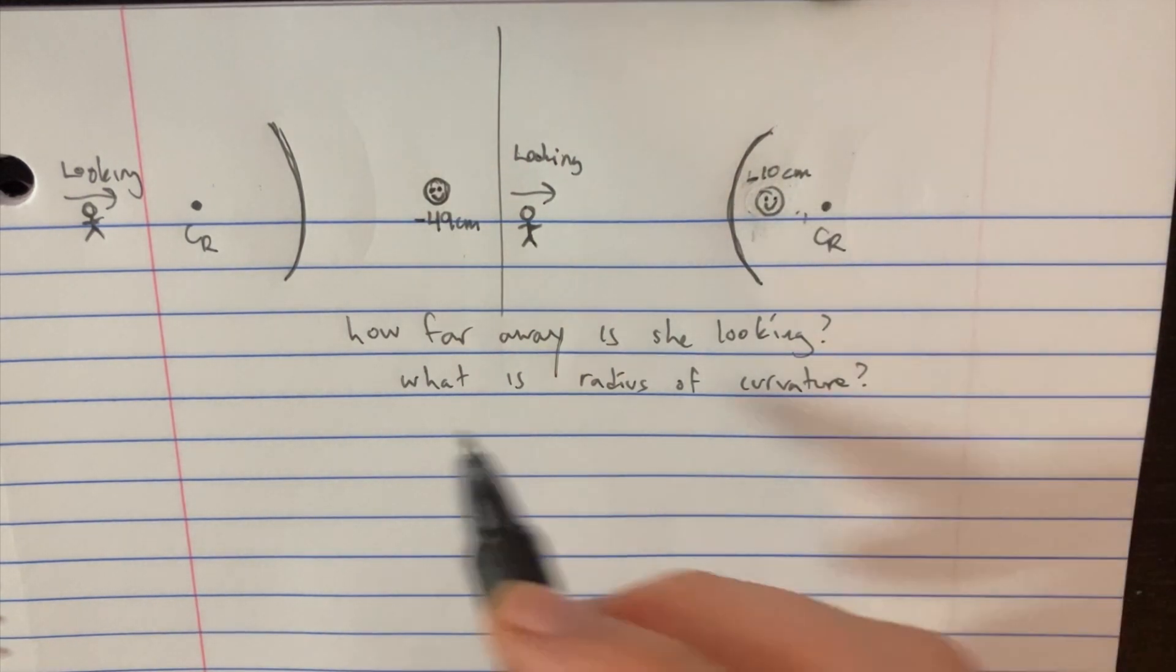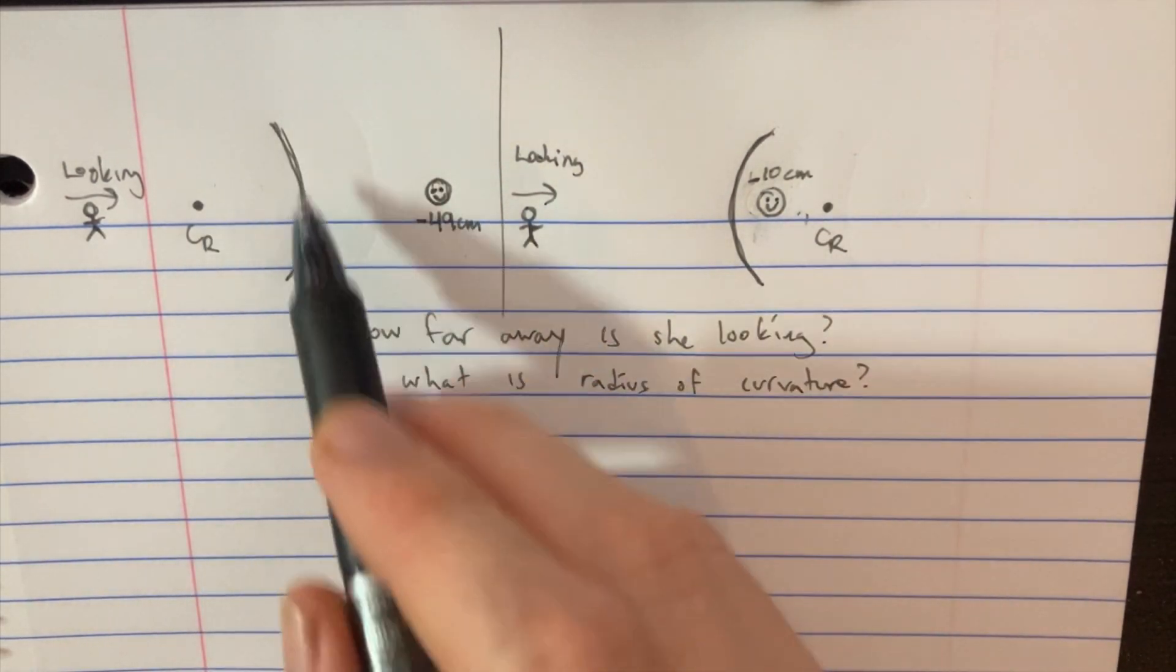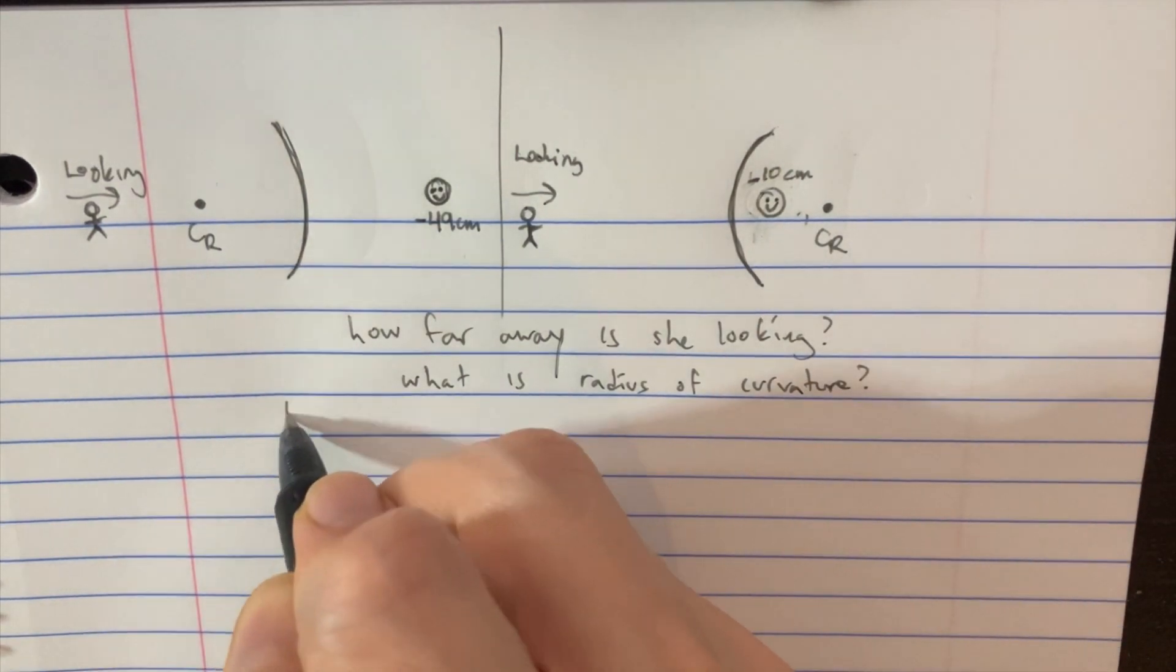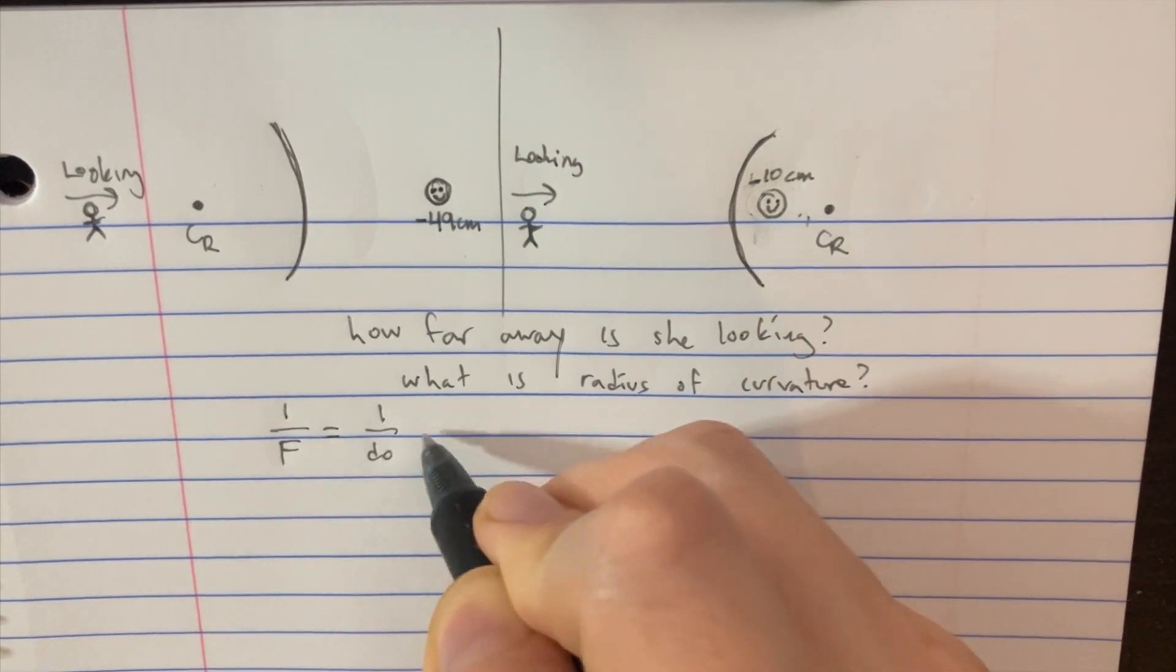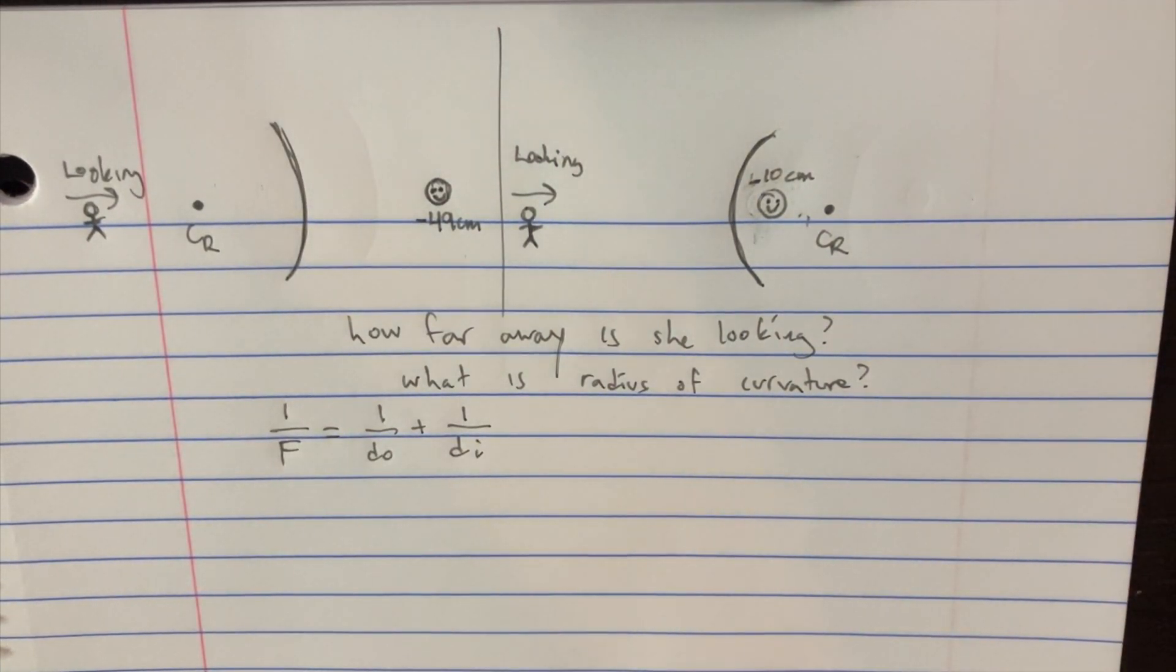So we're trying to figure out how far away is this person looking and what's the radius of the curvature here. Well, to solve this, we want to use the equation 1 over F equals 1 over the distance to the object plus 1 over the distance to the image.